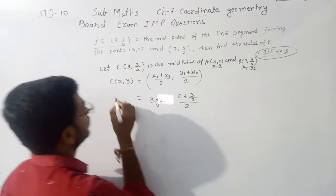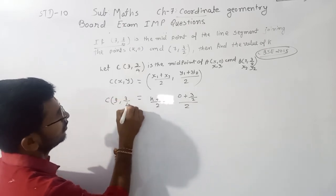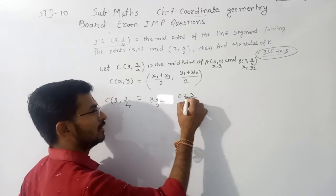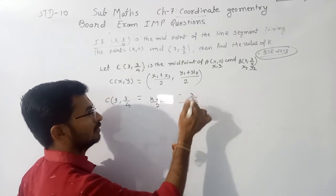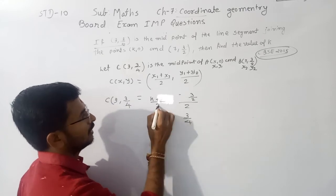Now C is (3, 3/4). These are 0+3/2, which is 3/2, and 2 goes to the left side and 3/4. Now here K+7 upon 2 as normal. Now we compare the X coordinates.